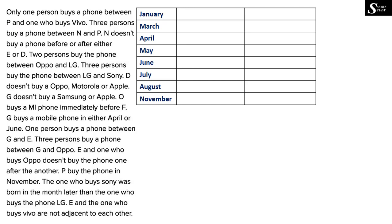The first clue: only one person buys a mobile phone between P and the one who buys Vivo — there must be a gap of only one person between P and Vivo, but we don't know their positions so we keep this on hold. The next clue: 3 persons buy a phone between N and P — there must be a gap of 3 persons between N and P, but again we don't know the positions, so we keep this on hold too.